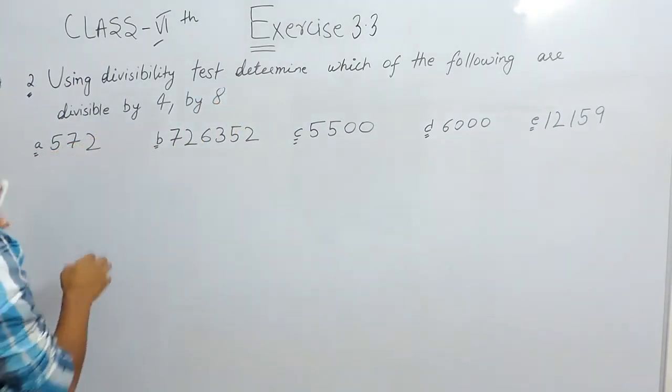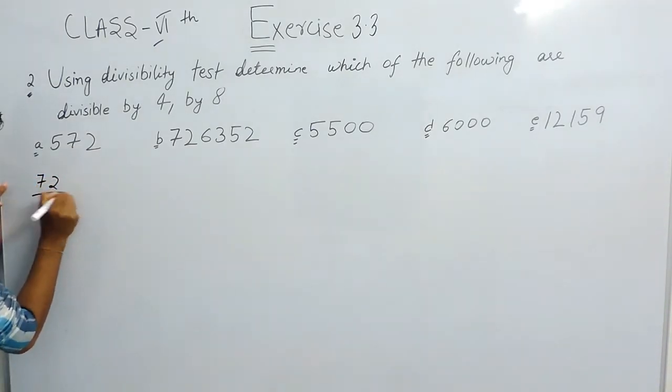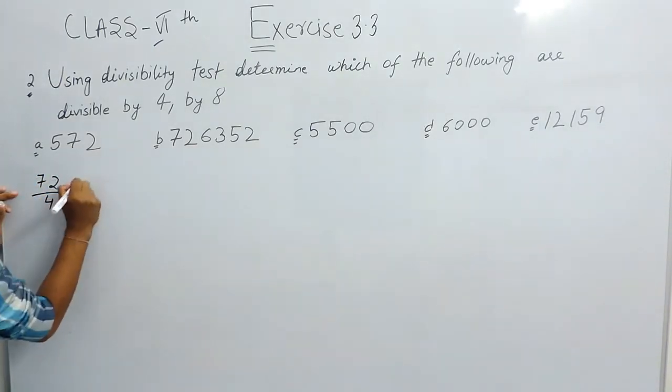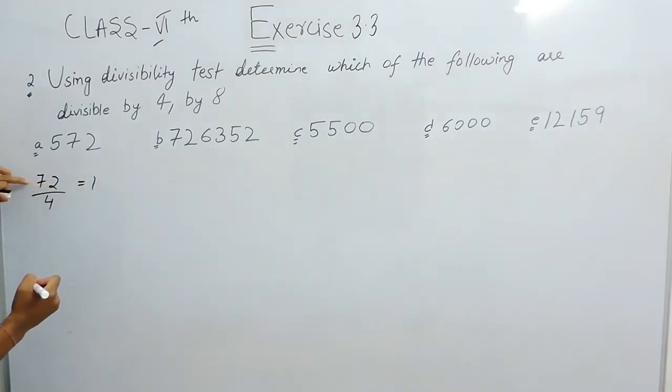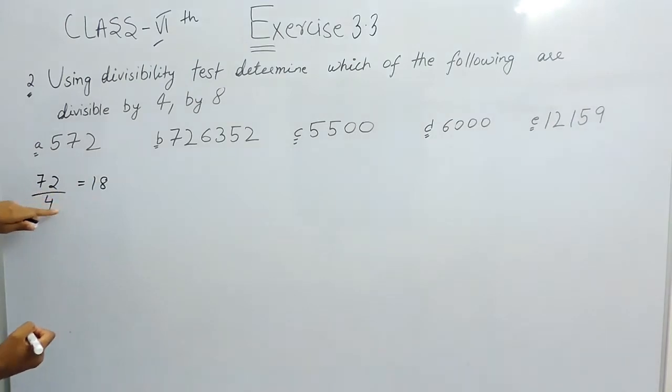So for the first one, if we divide the last two digits by 4 it will be 72 upon 4. So 4 goes into 72 eighteen times with remainder 0, which means 32, and 4 times 8, then it is divisible by 4 completely.